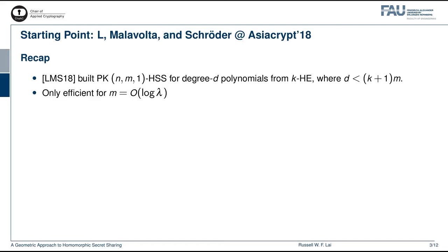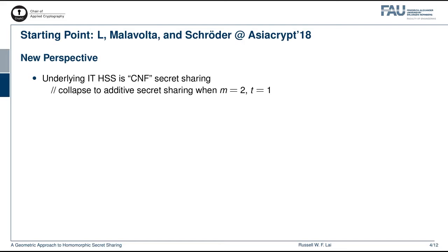Our starting point is the work of myself, Malavolta and Schroeder back in AsiaCrypt 2018, which we refer to as LMS18. The work of LMS18 built public-key HSS schemes for degree D polynomials from KHE, where D is strictly smaller than K plus 1 times M. A significant drawback of this scheme, however, is that it is only efficient when the number of servers M is logarithmic in the security parameter. In order to improve this old result, we revisit it from a new perspective. Specifically, if we view their HSS scheme as the result of compiling an IT-HSS scheme with a homomorphic encryption scheme, then we can see that the underlying HSS scheme is actually the so-called CNF secret sharing scheme.